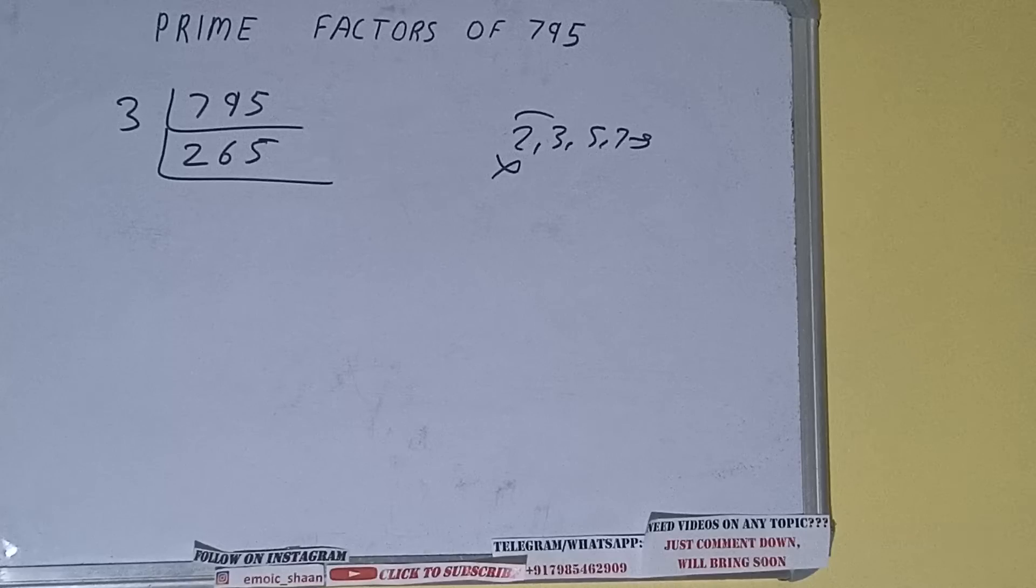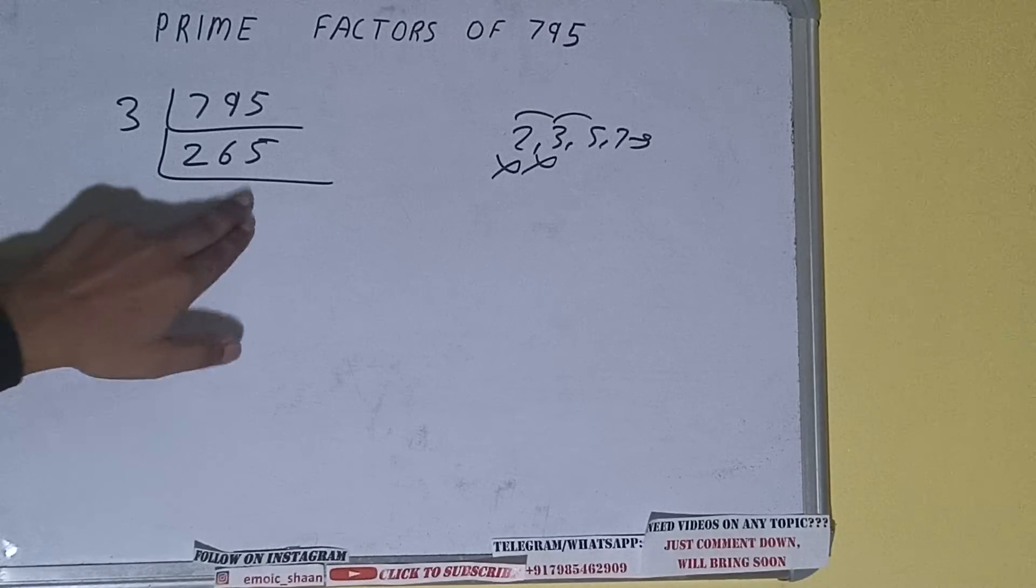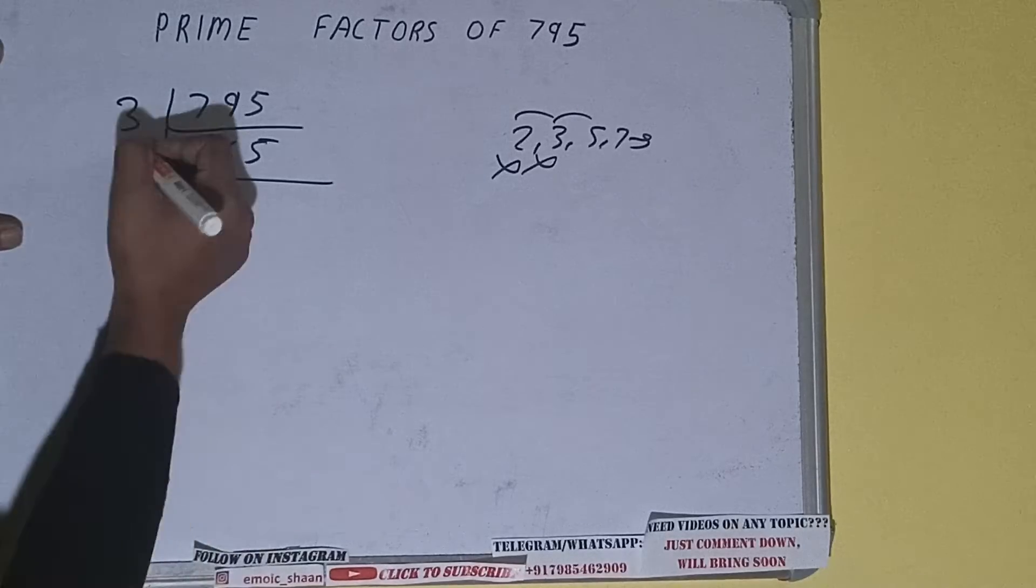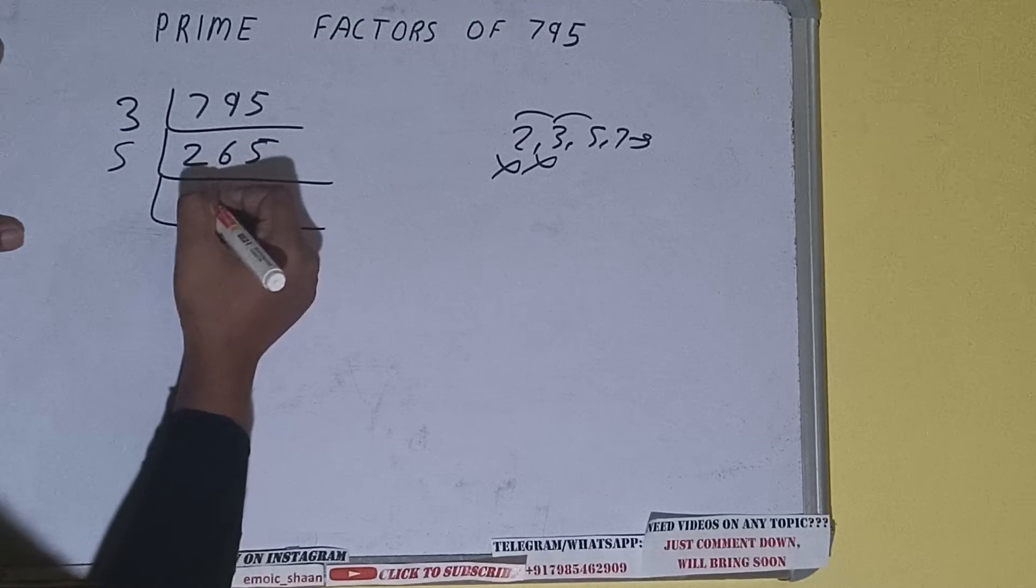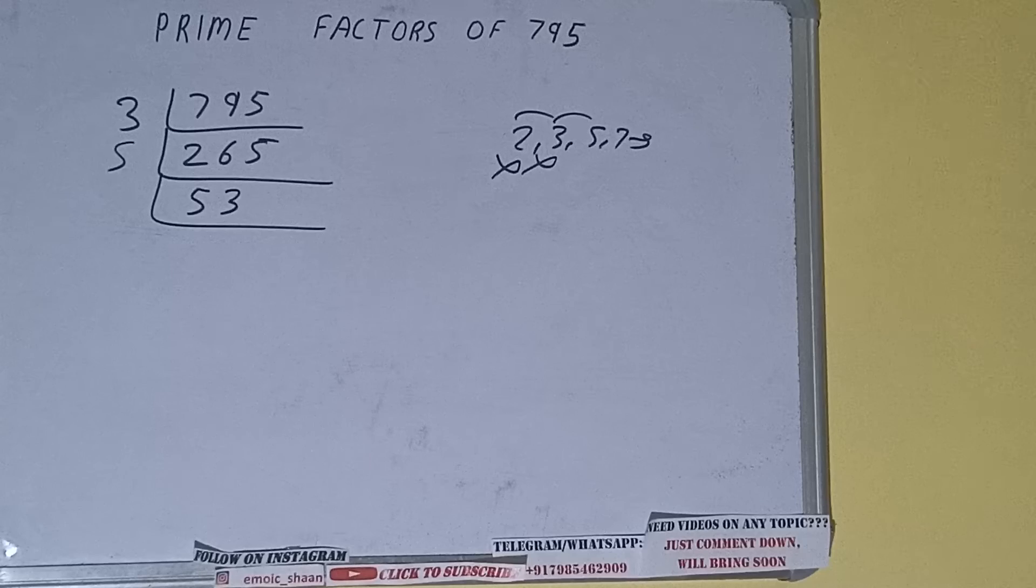Let's check with the next lowest prime number, that is 5. The last digit is 5, so it is divisible by 5. So divide it and we'll be having 53.